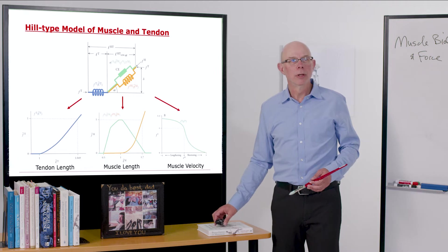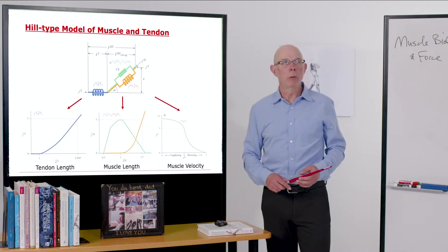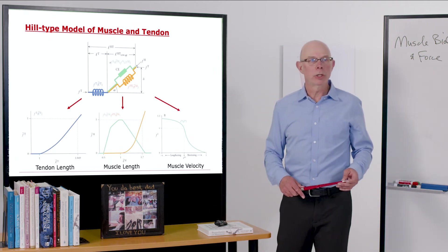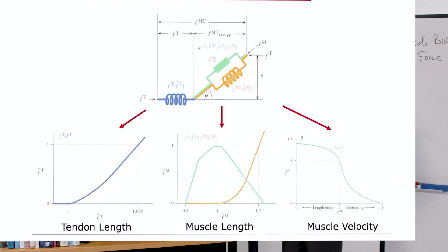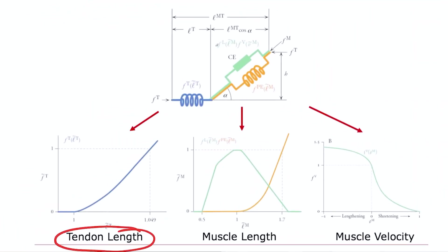Now bringing it all together into this Hill-type model of muscle and tendon, what you can see is that we have a tendon force-length curve here—force versus length—representing the tendon spring. Here we have muscle that has an active and passive force-length curve. So here we are: the muscle tendon force-length curve active, the passive muscle force-length curve.